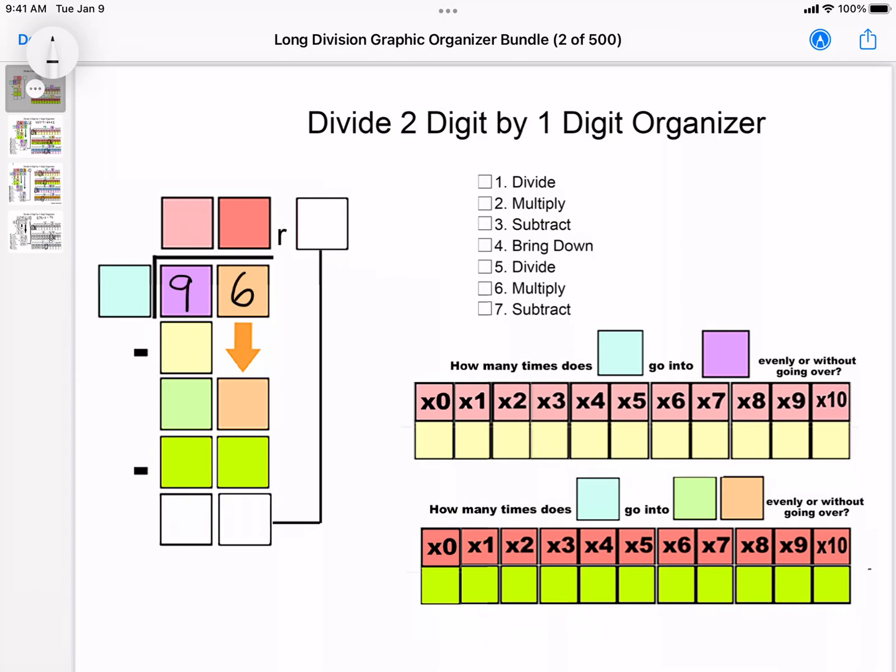Say we had 96 divided by 4. They're going to follow the colors to make sure they know where to put everything. Our first step is divide. How many times does 4 go into 9 evenly, or without going over?